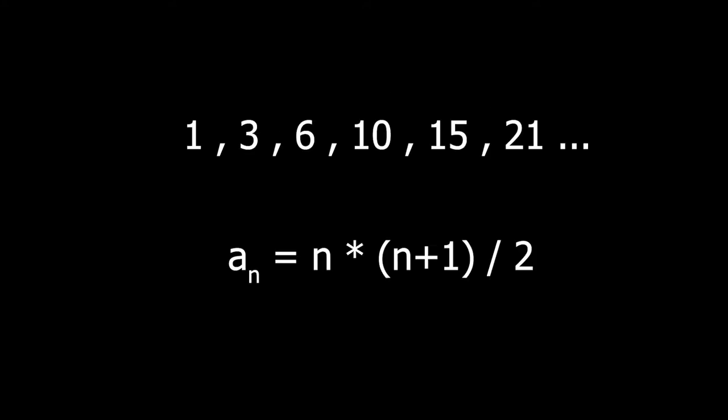For example, the sequence 1, 3, 6, 10, 15, 21, and so on, which is known as triangular numbers, can be represented as aₙ equals n times n plus 1 divided by 2. More on this later.